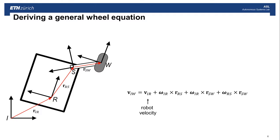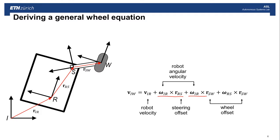The first term is the robot velocity — some part of the wheel's motion within the inertial frame is explained by the velocity of the robot. The V's are velocities and the omegas are angular velocities; the R's are displacement vectors. The next term is the robot's angular velocity, involving a cross product with the steering offset and a cross product with the wheel offset — these are lever arms, and the further away the wheel is from the robot's center, the faster it's going to move. Finally, we have the steering rate cross product with the wheel offset, so the rate of steering explains some of the motion of the wheel.